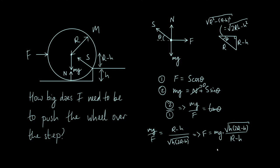One thing to notice is that as h tends towards r, the force tends towards infinity, which is what you would expect on physical grounds. If you bring the step all the way to the midpoint of the wheel, no matter how hard you push at the midpoint you're never going to get it over the step. So the formula does behave as we would physically expect. And there we go — that's our answer. I hope this has been useful and interesting, and I'll see you again soon to go over some more physics and maths problems.